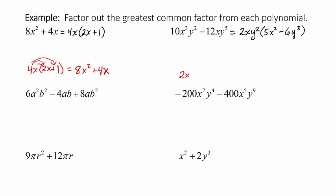Let's verify by distributing 2xy² back through. 2xy² times 5x² gives 10x³y², since x times x² is x³ and we multiply back in the y². For the second term, 2 times 6 is 12, giving minus 12x, and y² times y³ is y⁵. So we get the original expression: 10x³y² − 12xy⁵.